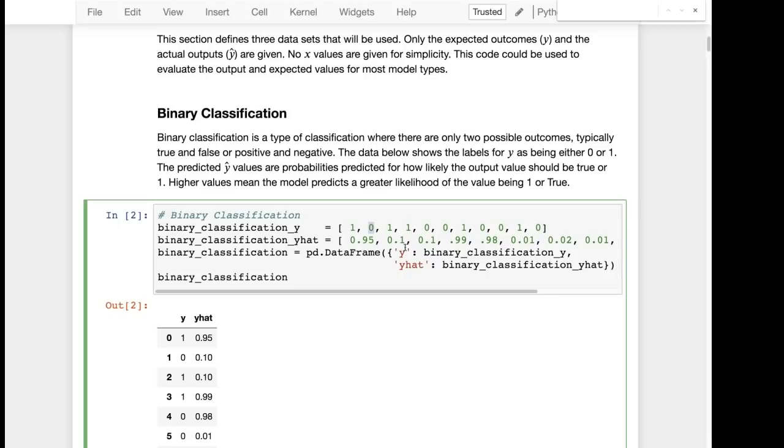Some of these it will be wrong on. For example the second to the last one is a one but it's really off. It has very low confidence. It thinks it's only 0.2 or 2 percent probability. We'll see later that it gets punished pretty good for that by some of these particularly log loss.